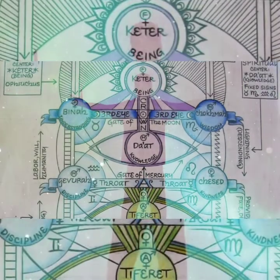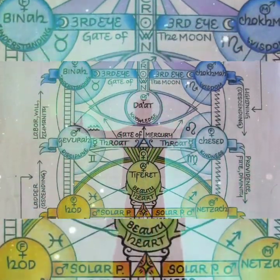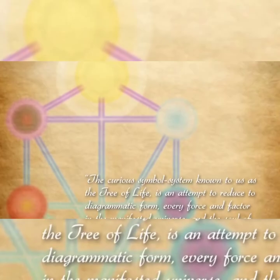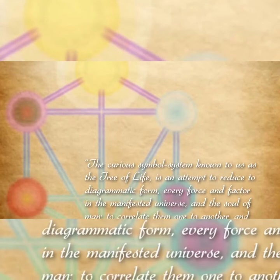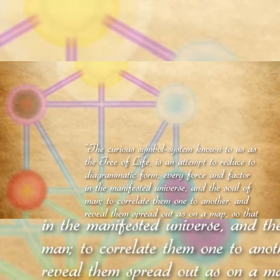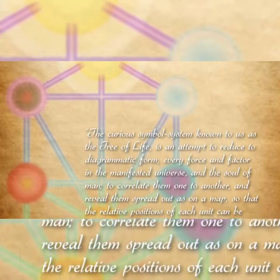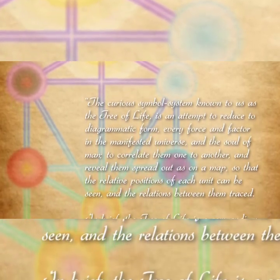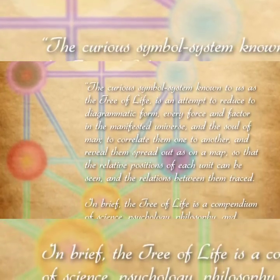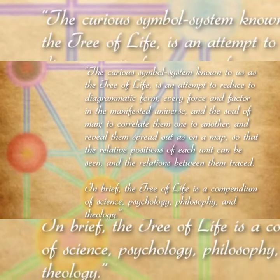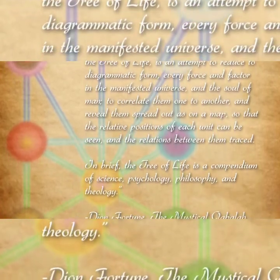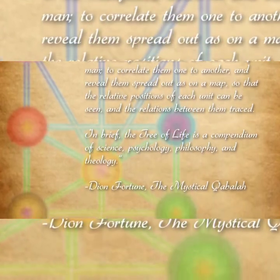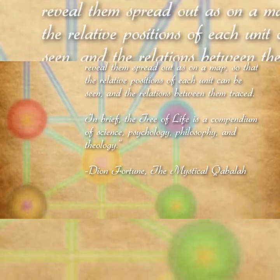It is a fundamental key which describes the nature of the universe and how all of creation fits together. In the words of Dion Fortune, the curious symbol system known to us as the Tree of Life is an attempt to reduce to diagrammatic form every force and factor in the manifested universe and the soul of man, to correlate them one to another and reveal them spread out as on a map. In brief, the Tree of Life is a compendium of science, psychology, philosophy, and theology.